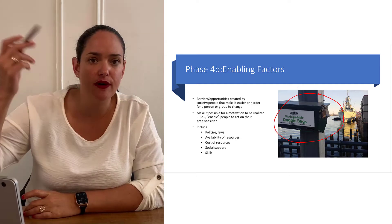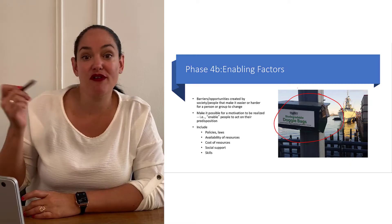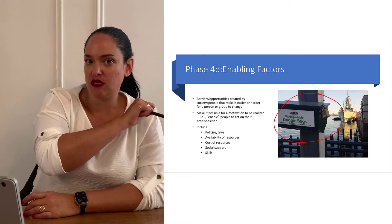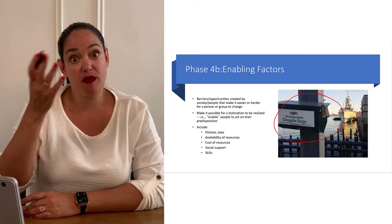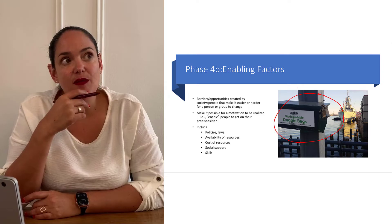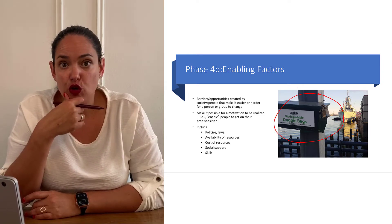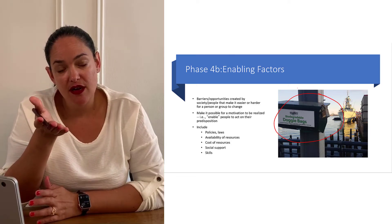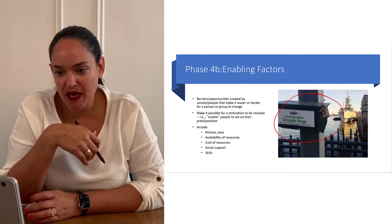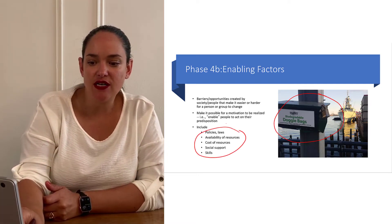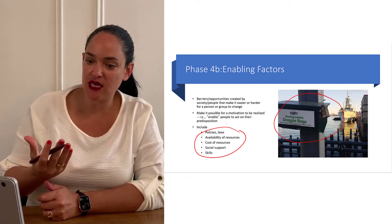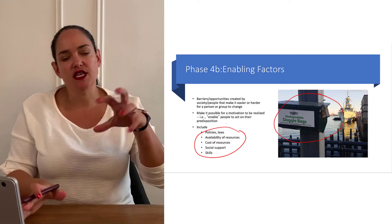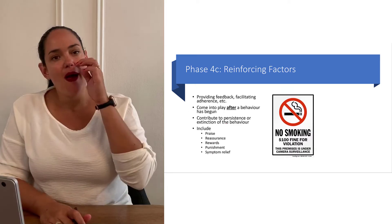Enabling factors are things that make a behavior easier to carry out. For example, if we want people to pick up their dog's poo from the streets, providing dog bags enables them to actually do it. With physical activity, enabling factors could be having good parks, cheap access to gyms, or building more gyms in a particular area. There are lots of areas where we can intervene to enable a behavior: policies, laws, investment in infrastructure, social support, and skills development.